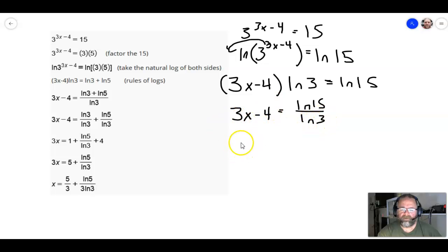So, I'm going to have 3x minus 4 is equal to the natural log of 15 over the natural log of 3. I can add 4 to both sides. So, 3x is equal to that natural log of 15 over the natural log of 3 plus 4. And then, finally, I can divide both sides by 3, which is really the same thing as multiplying both sides by 1 third.